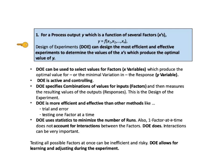DOE can be used to select values for factors — x variables — which produce the optimal value for, or the minimum variation in, the response, which is a y variable. For example, the factors in a laundry process could be water temperature and type of detergent, and the response would be a measure of cleanliness. DOE is active in controlling, which can be done with processes but usually not with populations. DOE doesn't collect data with pre-existing values; instead, it specifies combinations of values for inputs and then measures the resulting values of the outputs.